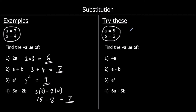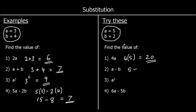In the first question, we've got 4a, so that means 4 times a, and a is 5. So it's 4 times 5, which is 20. Question 2: a minus b. We're changing a into 5 and b into 2, so it's 5 minus 2, which is 3.